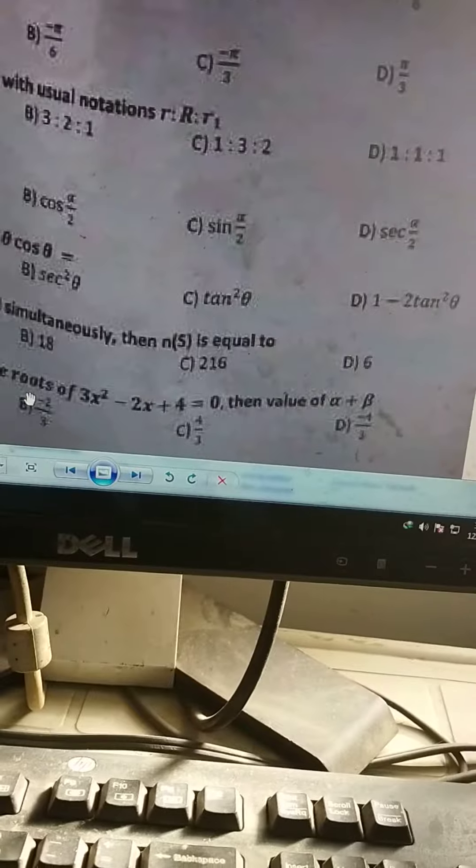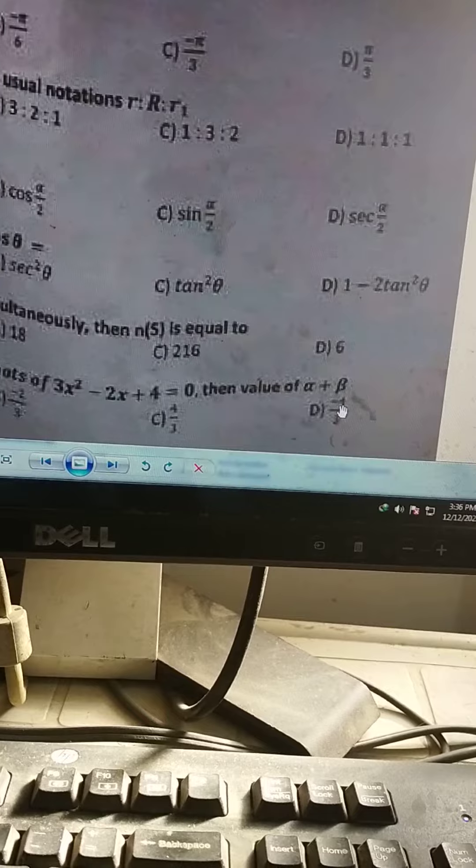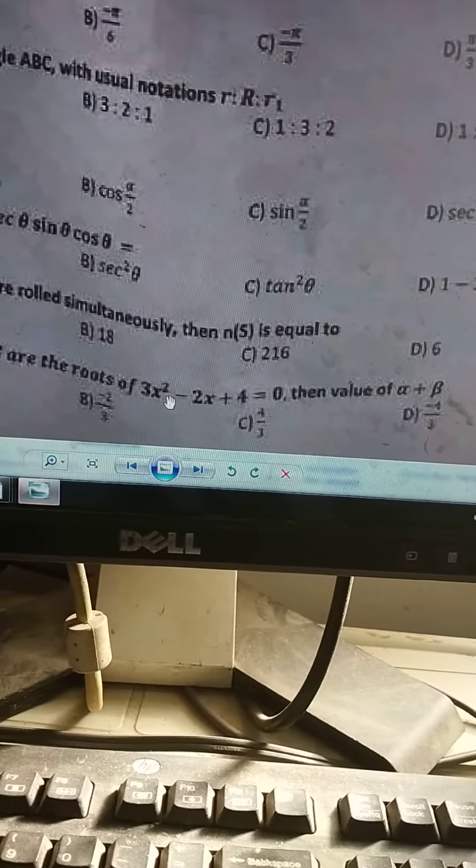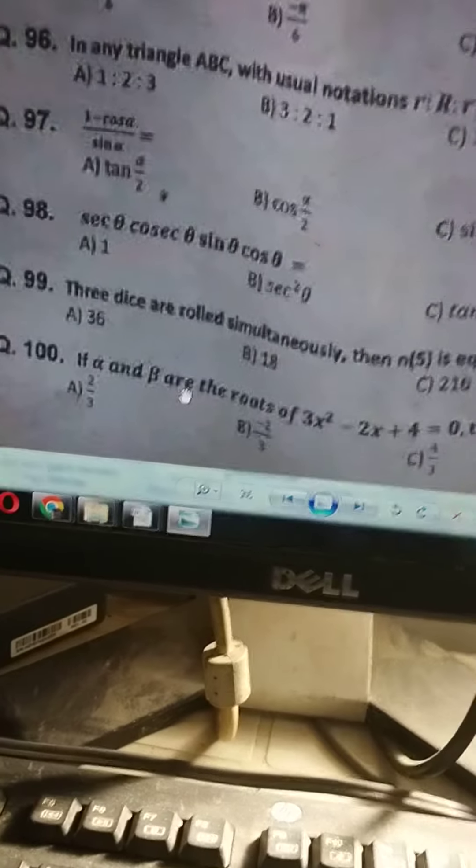Then alpha and beta are the roots of 3x square minus 2x plus 4 equal to 0, the value of alpha plus beta. So this is minus b upon a, 2 upon 3. And this is the answer.